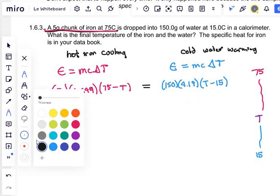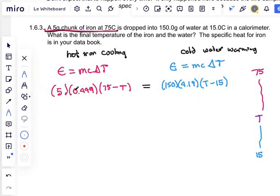So how do we solve this? Well here we have 5 times 0.449 and we can do that. 5 times 0.449 is 2.245.